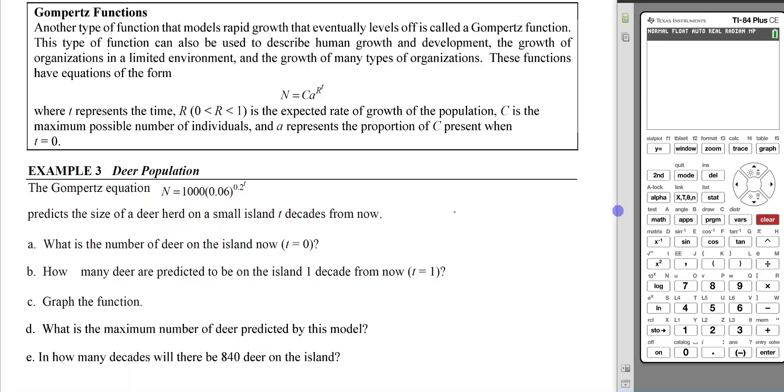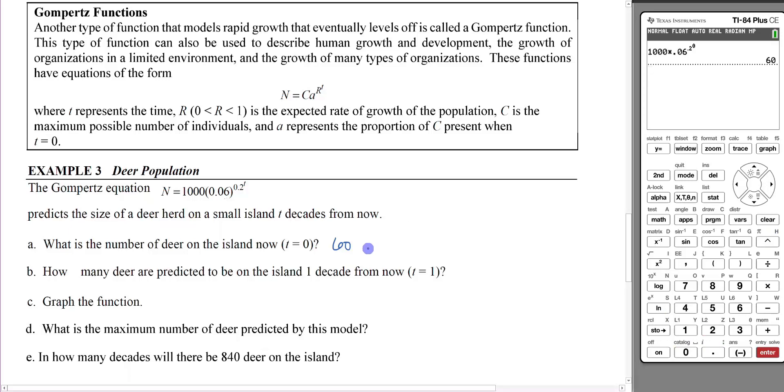Example 3: Deer Population. The Gompertz equation N = 1000(0.06)^(0.2^T) predicts the size of a deer herd on a small island T decades from now. What's the number of deer on the island now when T = 0? If T is 0, then 0.2^0 = 1, 0.06^1 = 0.06, and 0.06 times 1000 is 60. We can put this into the calculator: 1000 times 0.06^(0.2^0) gives us 60 deer.